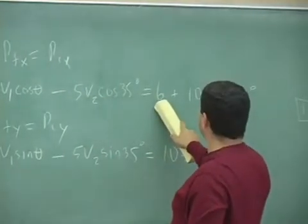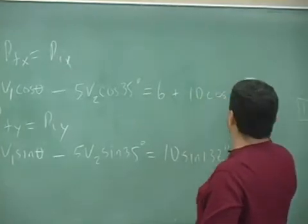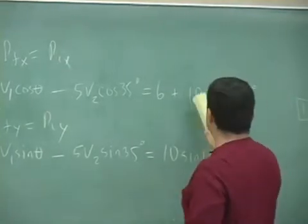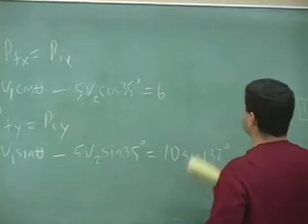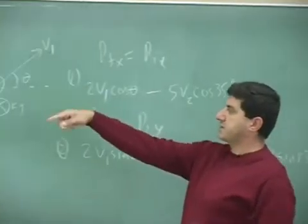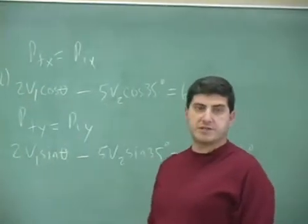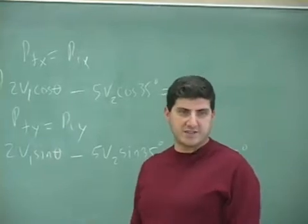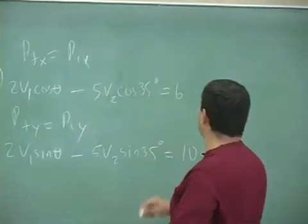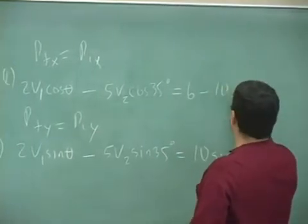six, what? Well, you don't have 10 cos 32 anymore, what do you have? Six minus, the momentum of the five kilogram is negative ten, right? So, six minus ten, you have negative four.